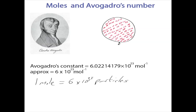That's 6 with 23 zeros after it — a very large number of particles. In chemistry, we refer to these particles as either atoms or molecules, so we'll stick with that for now and work through some examples.